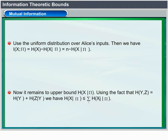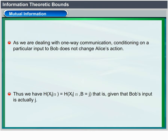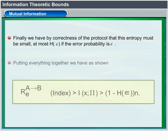To upper bound H(X|π), using H(Y,Z) = H(Y) + H(Z|Y), we have H(X|π) ≤ Σ_j H(X_j|π). As we are dealing with one-way communication, conditioning on a particular input to Bob does not change Alice's action. Thus H(X_j|π) = H(X_j|π, B=j), i.e., given that Bob's input is actually j. By correctness of the protocol, this entropy must be small — at most H(ε) if the error probability is ε. Putting everything together gives the desired bound as shown.